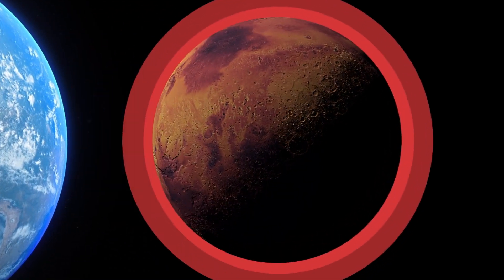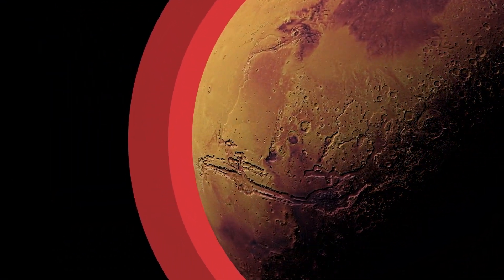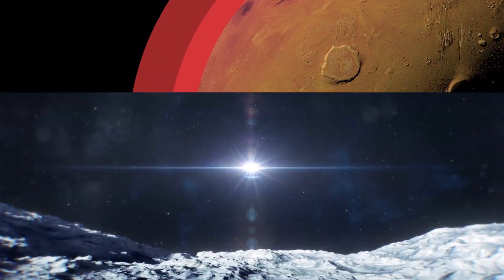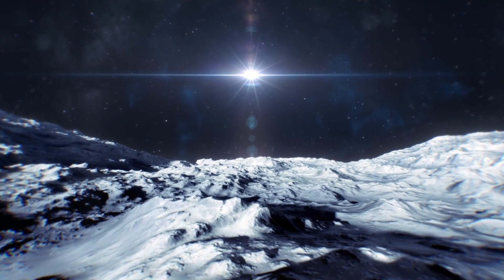This atmosphere safeguards Mars and any potential settlers from dangerous meteoroid rains and harmful UV sun rays, which are obvious threats on the Moon due to its lack of an atmosphere.